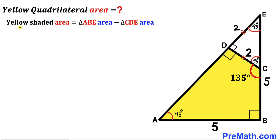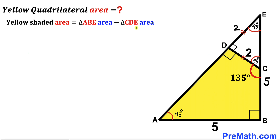Now we can observe that the area of yellow shaded quadrilateral ABCD is going to equal the area of the big right triangle ABE minus the area of the small right triangle CDE. So our task is to calculate both of these triangle areas.